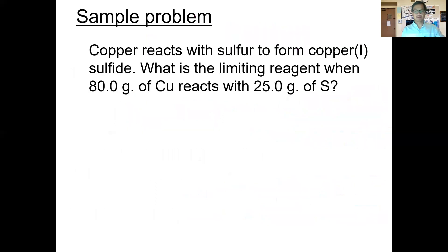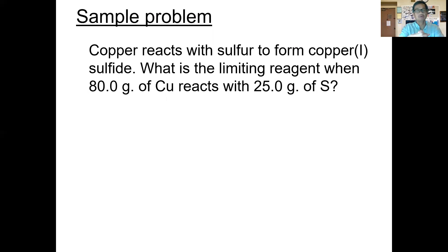Let's pick up where we left off yesterday — talking about limiting reagents. Limiting reagents are simply the reactant that runs out first. When it runs out, it limits the amount of product we get, and the reaction stops. For example, if you're making cookies and run out of milk or flour, you can't make any more cookies — that ingredient is the limiting reagent. The same applies in chemistry: when one starting material runs out, you can't make any more product.